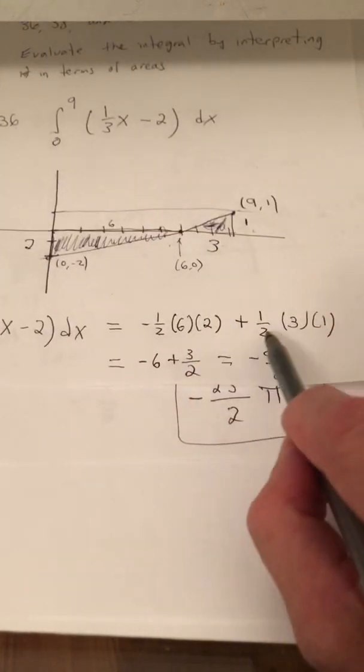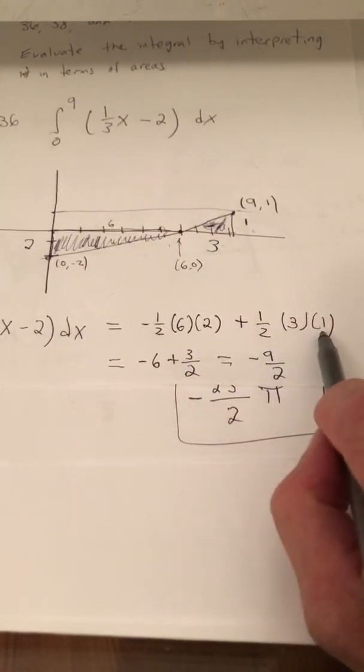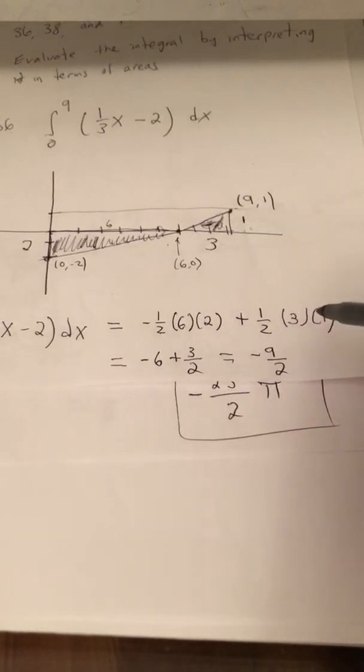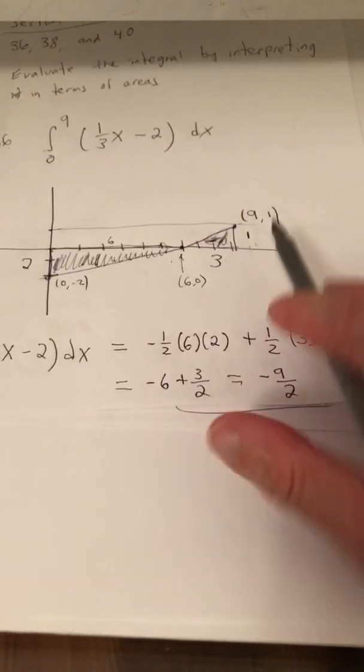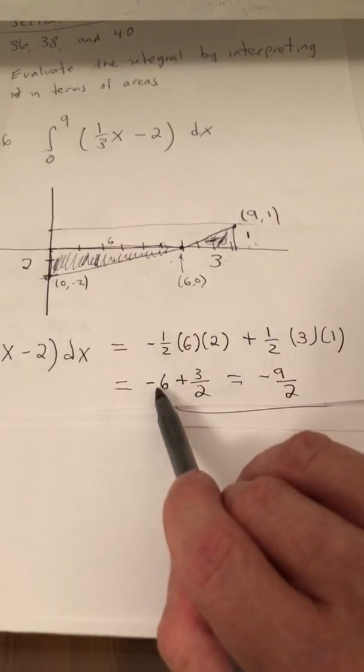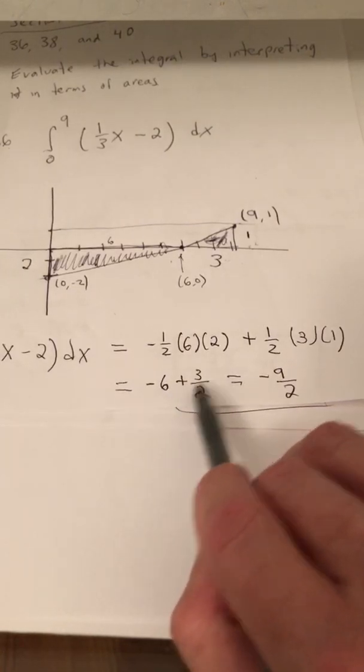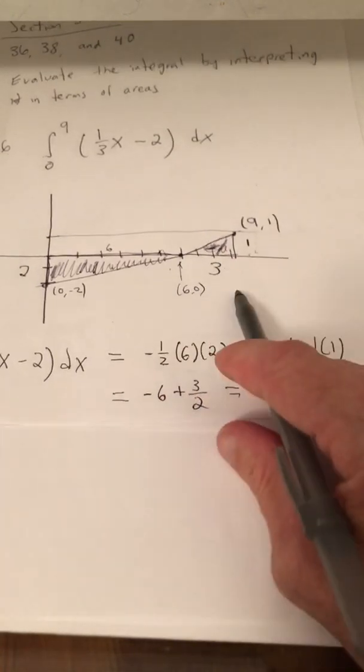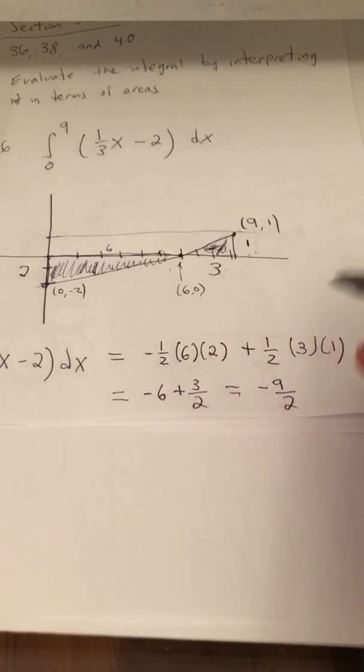Plus 1/2 base times height of this triangle. So what we end up with is negative 6 plus 3/2. So when you combine those, you end up with negative 9/2.